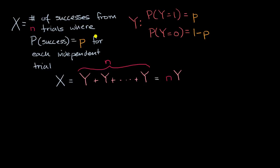We also talked in that previous video about the expected value of this binomial variable. We said this binomial variable can be viewed as the sum of n Bernoulli variables. So this random variable y — the probability that y equals one, which you could view as a success, is equal to p. The probability that it's a failure, that y equals zero, is one minus p. So whether y is one or zero is really whether we had a success or not in each of these trials. If you add up n y's, then you are going to get x.